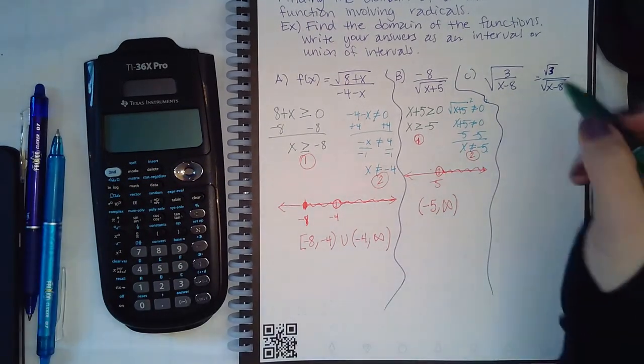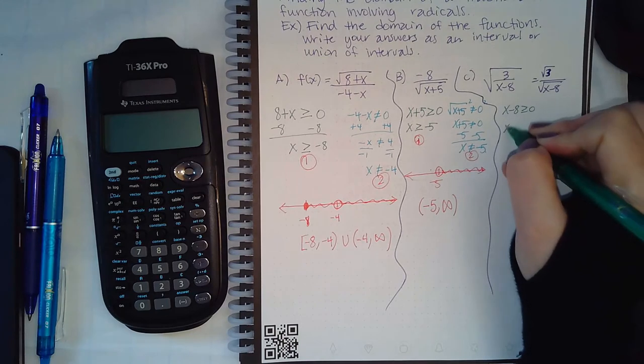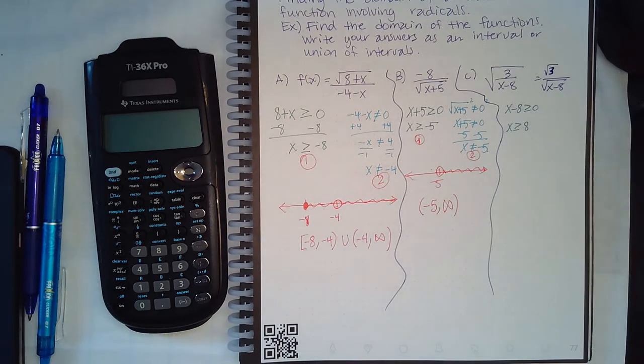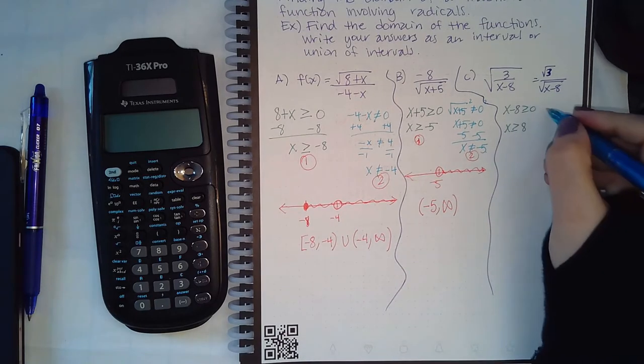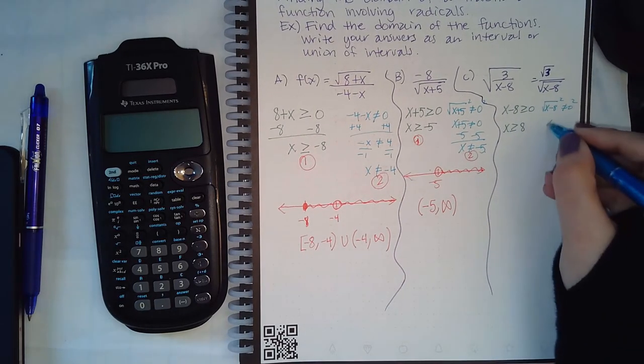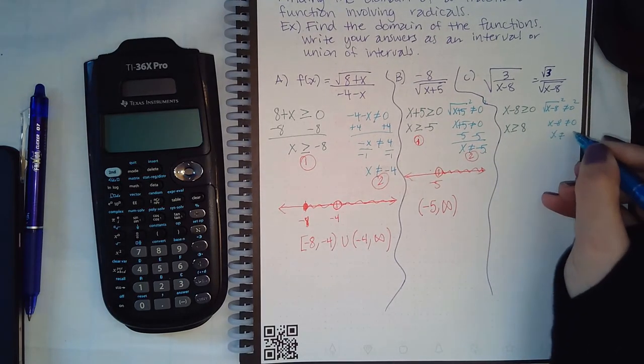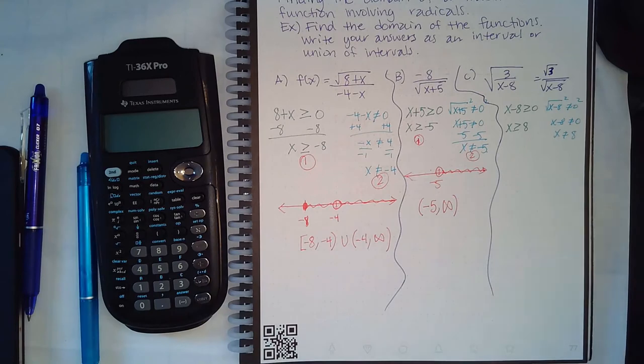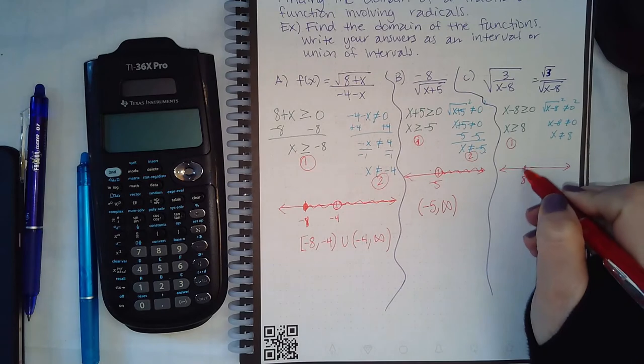But we do need to figure out which x values make this radicand greater than or equal to zero. And if I add eight to both sides I get x has to be greater than eight. But I also know that the denominator cannot equal zero. So if I square both sides I get x minus eight cannot equal zero, still, and x cannot equal eight.